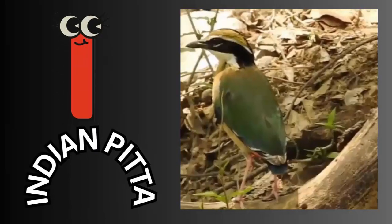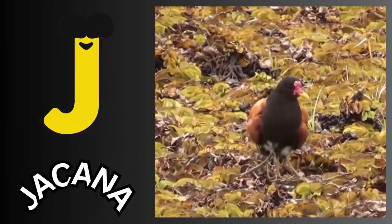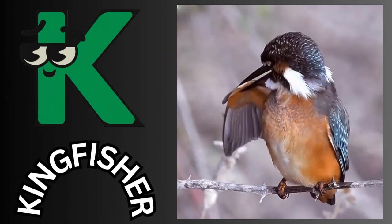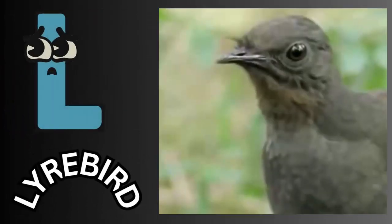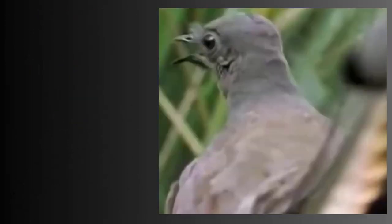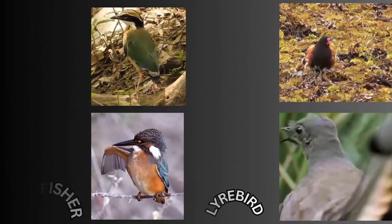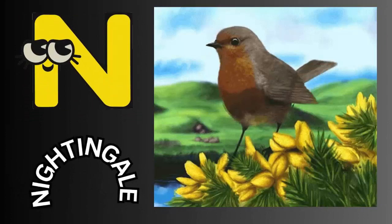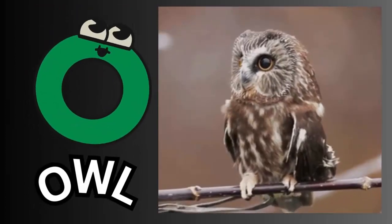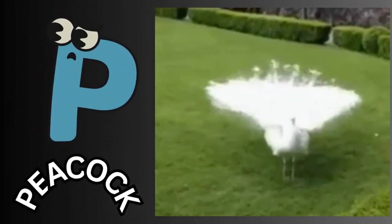II for Indian Pitta. JJ for Jacana. KK for Kingfisher. LL for Lyrebird. MM for Macaw. NN for Nightingale. OO for Owl, PP for Peacock.